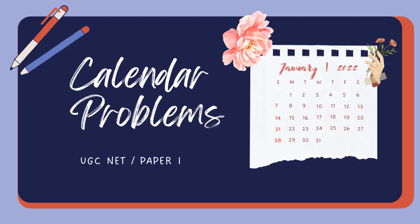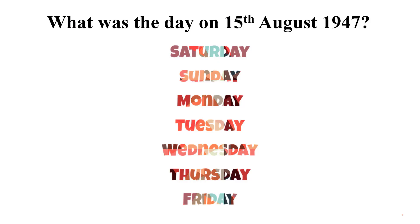Hello, everyone. In this video, we're going to learn how to solve calendar problems that are commonly asked in paper one of the UGC NET exam. So sometimes you'd be asked a question like this: what was the day on 15th August 1947? You'd be given a particular date and asked to find what day it was — was it a Saturday, Sunday, or Monday?